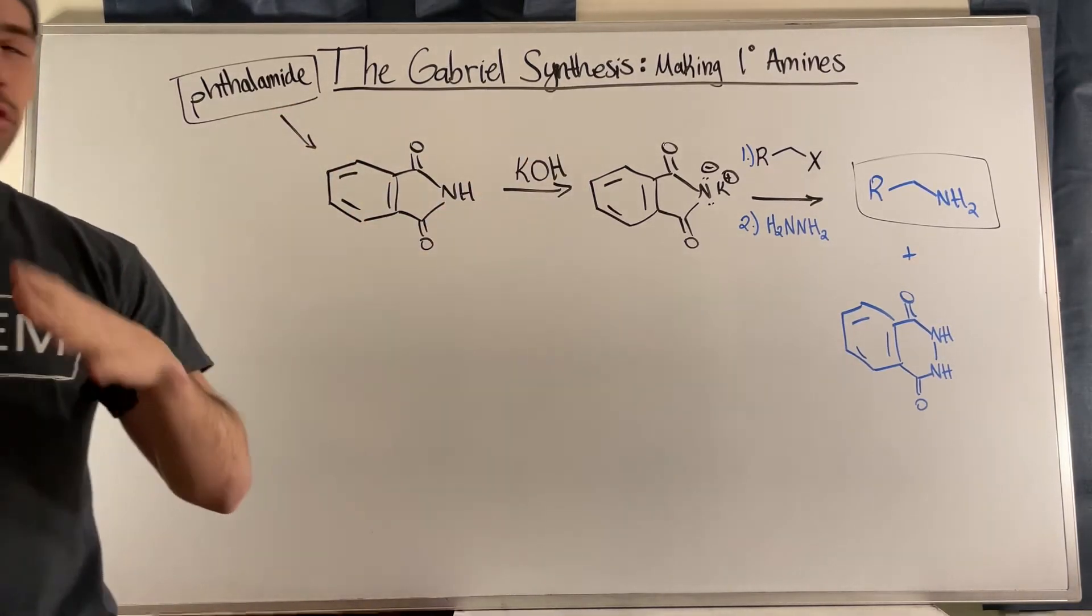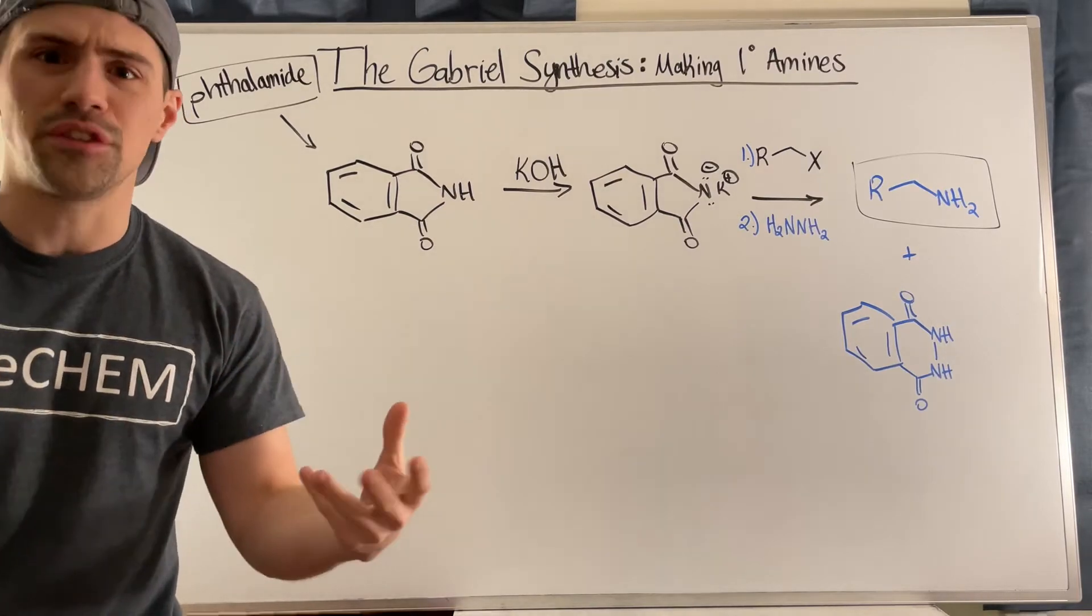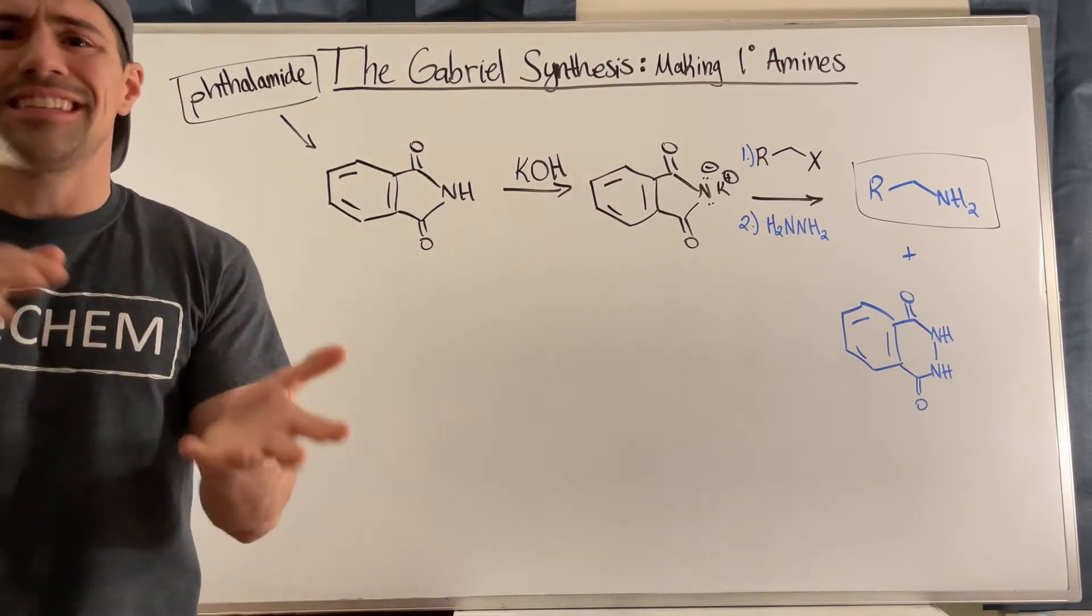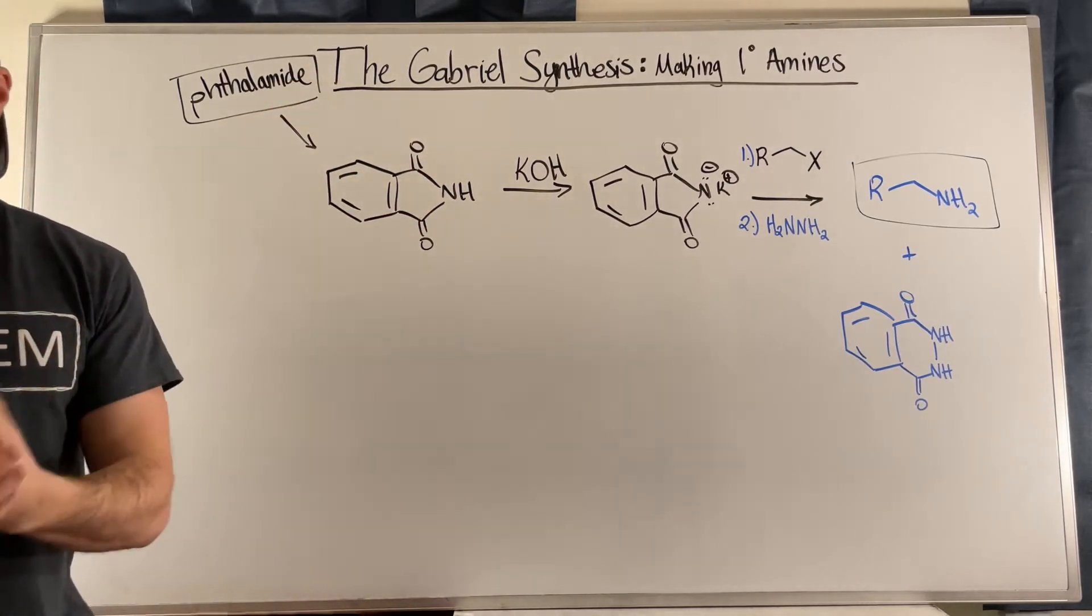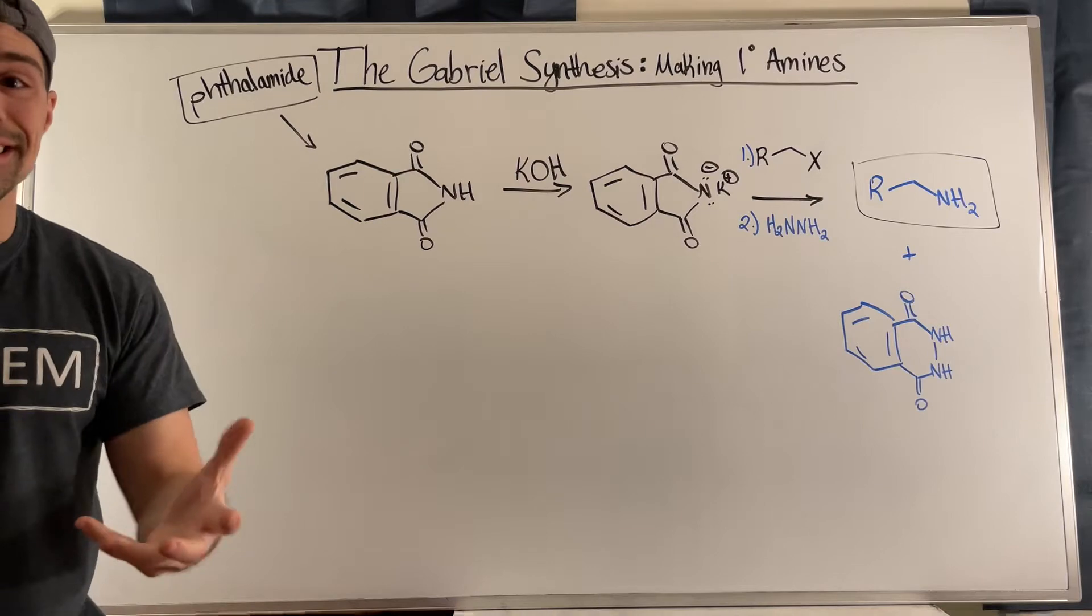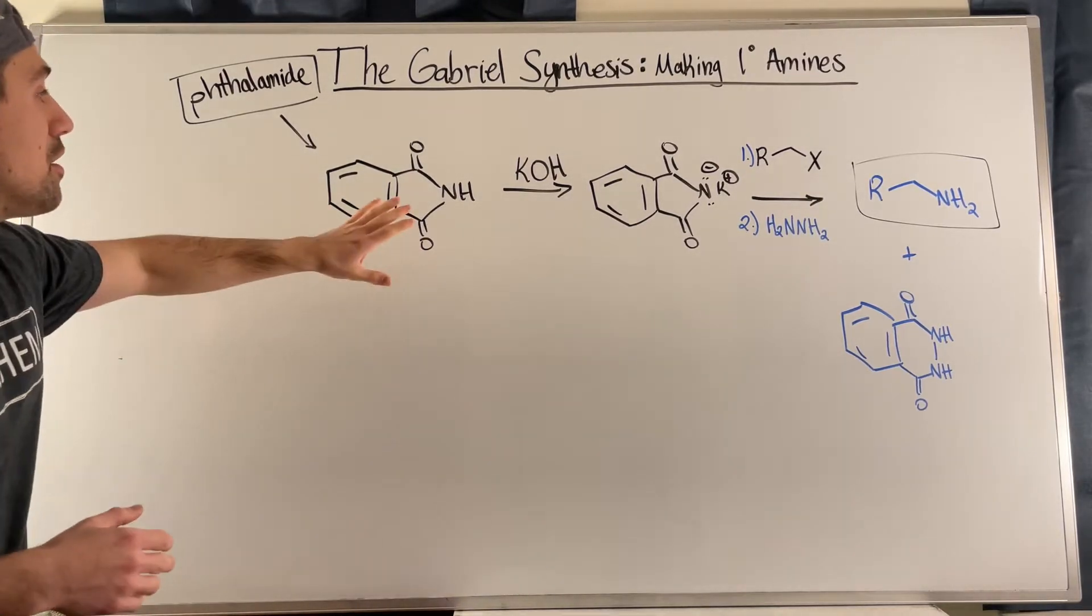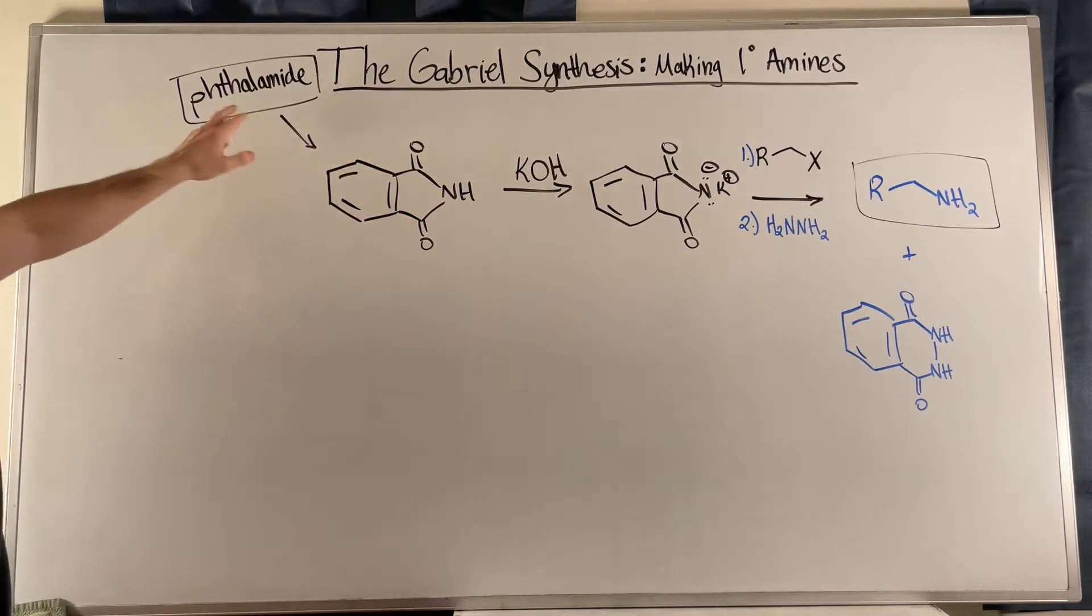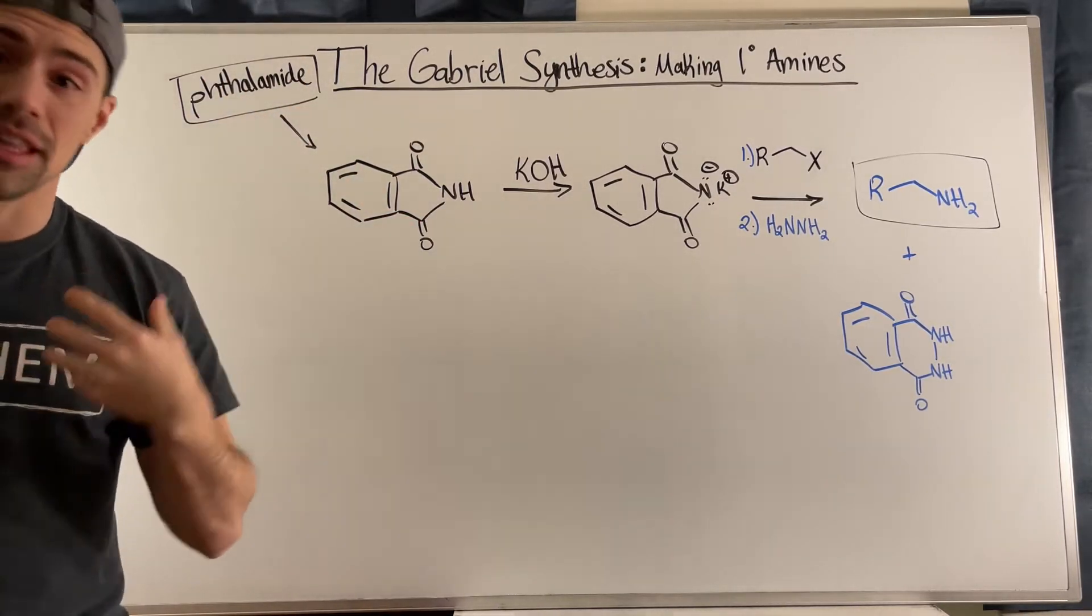So there's a video on Jochem already. It's part zero, if you will, of the Gabriel Synthesis. It's a nice intro. It doesn't really touch on the actual core reaction. In fact, all it is really is a practicing of a double addition elimination where you create this very important diamine called thalamine, or thalamide, potato, potato. I'm going to say thalamine.